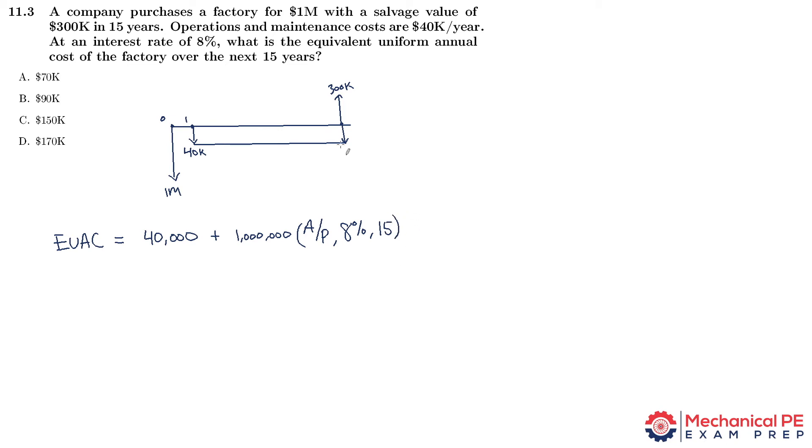For the salvage value, we'll write that as negative $300,000, which is unusual, but that's how we're approaching this problem. That's a future value, so we're going to multiply it by the cash flow factor A given F at 8% for 15 years.